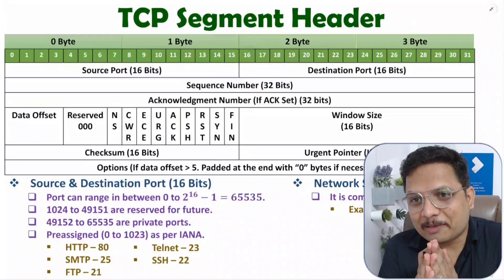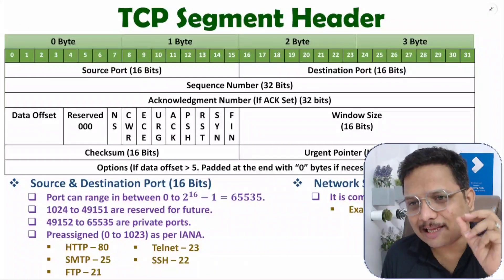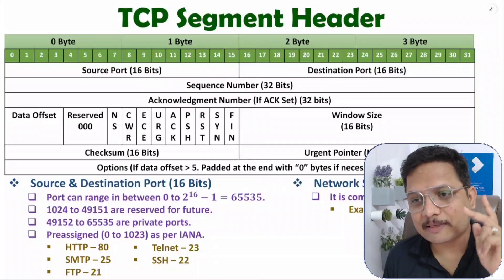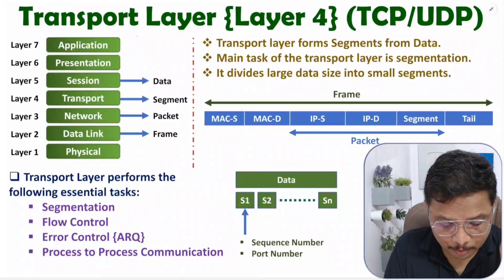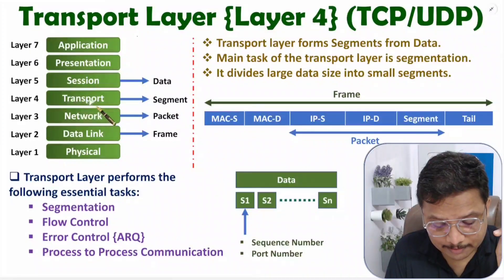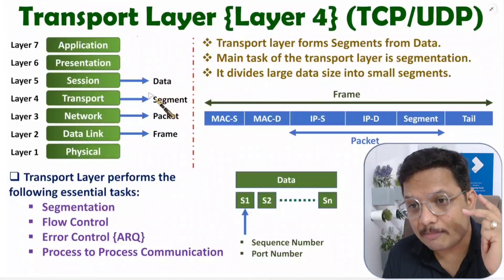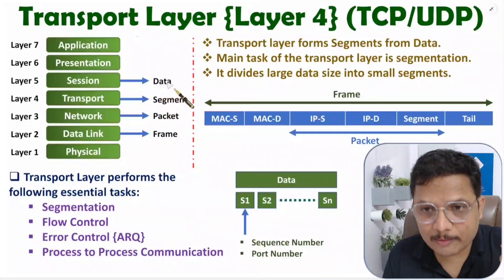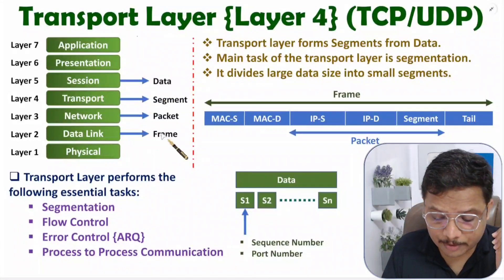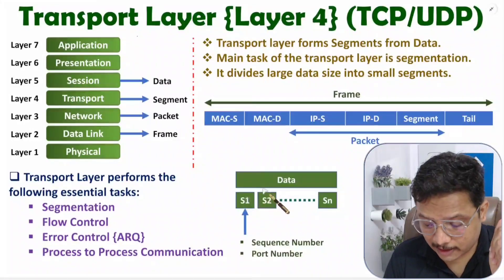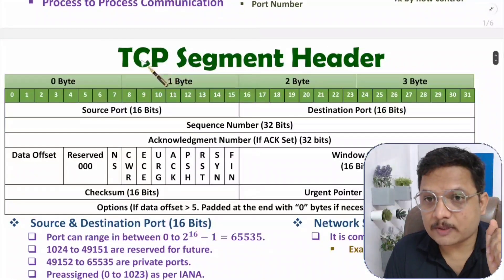Hello friends, welcome to Engineering Funda Family. In this video I'm going to explain TCP segment header and how port addresses are there with TCP segment header. In my last video I explained how the transport layer works — its output is a segment, and its input is data. This data may be video, audio, image, web page, or text data of large size. Large size data is not forwarded directly on a computer network; instead, we bisect it into segments.